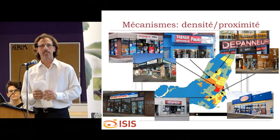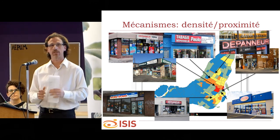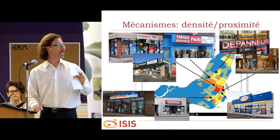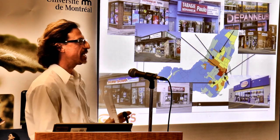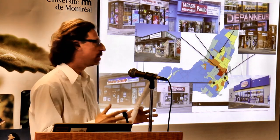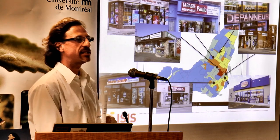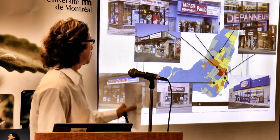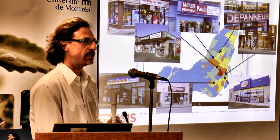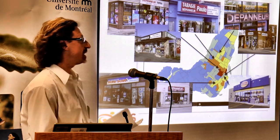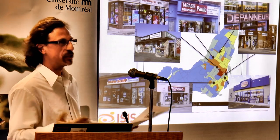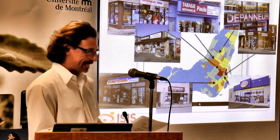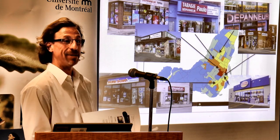Now, mechanisms that can explain these findings. The first one is certainly proximity, which is well-determined in the literature. What you see here on this slide is a map of Montreal divided by sociological neighborhoods, showing in different colors the density per square kilometer of tobacco retail stores. The ones in orange and red have the highest densities. In this case, tobacco becomes much more accessible, which definitely has an impact on maintenance of smoking.